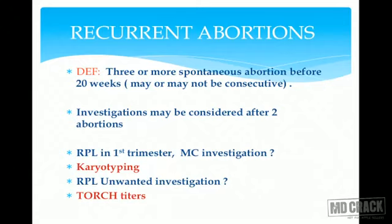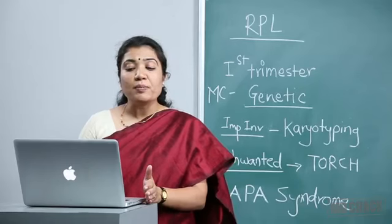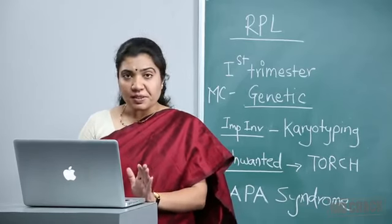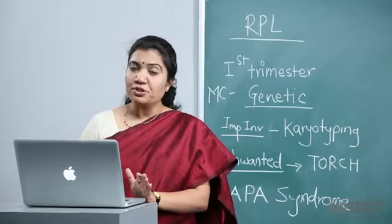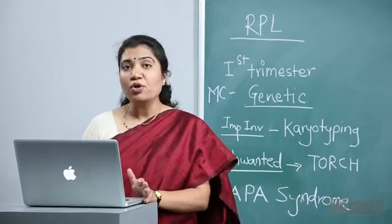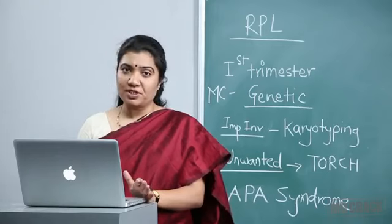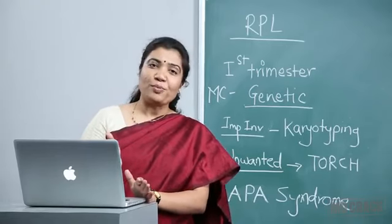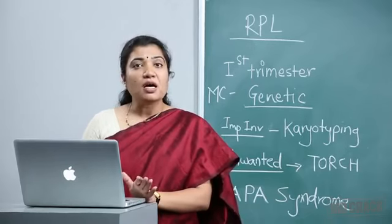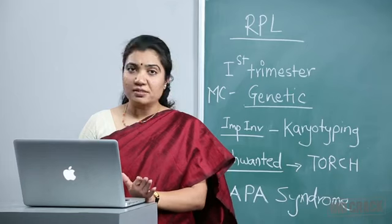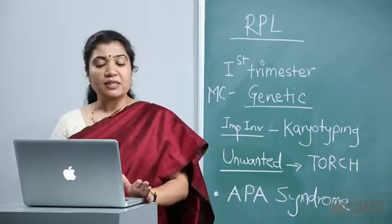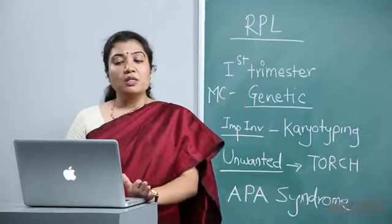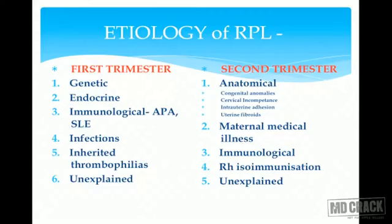In first trimester RPL, the most common cause is genetic. The most desired investigation in recurrent pregnancy loss is karyotyping of both parents. The most unwanted investigation — which is unfortunately done most commonly — is TORCH. TORCH titers are not indicated in recurrent pregnancy losses. We will come to this point again in detail.